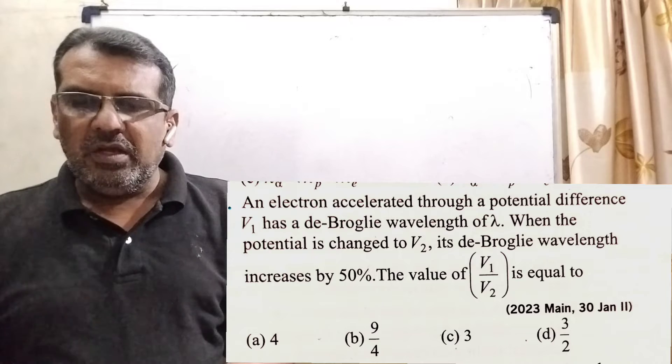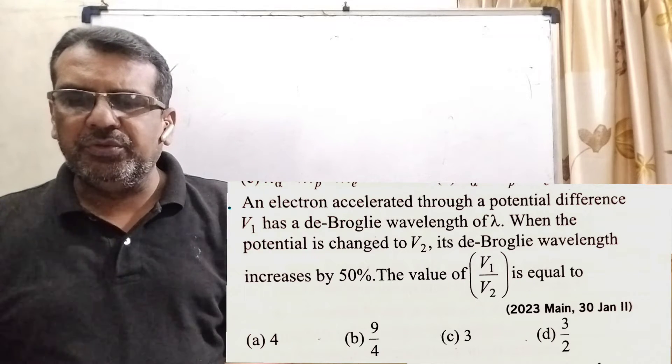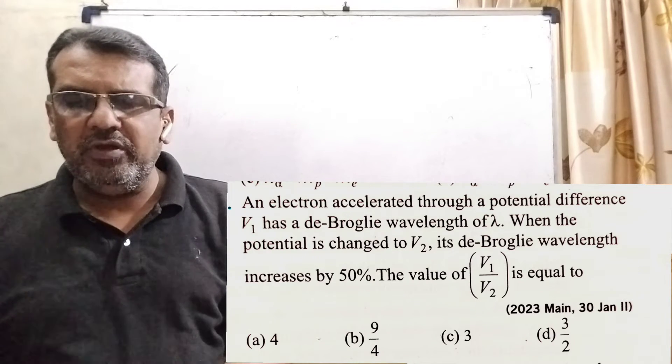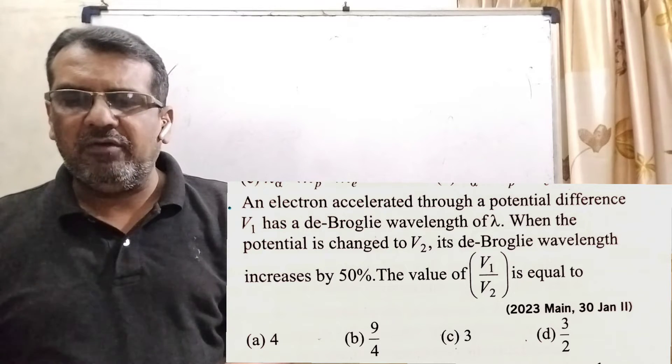Now, here is the question. An electron accelerated through a potential difference V₁ has a de Broglie wavelength of λ.